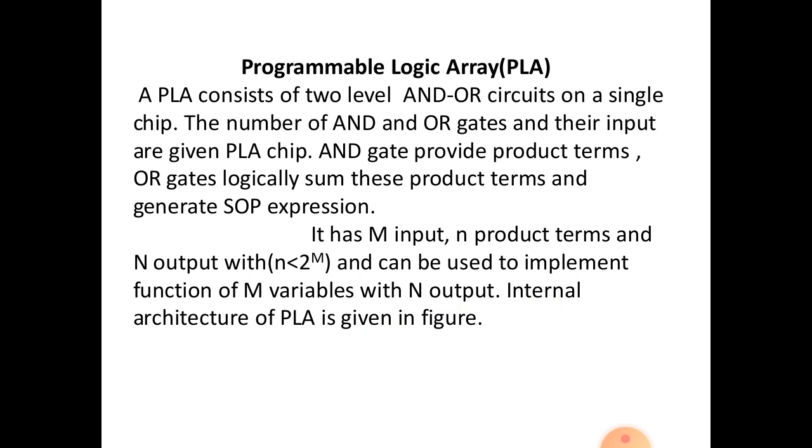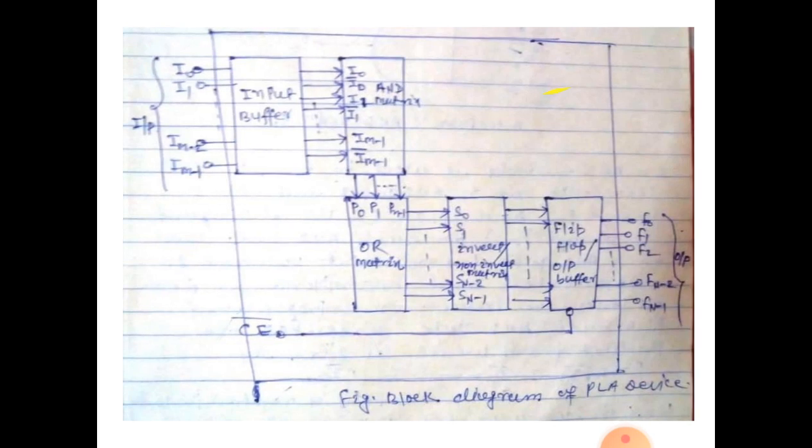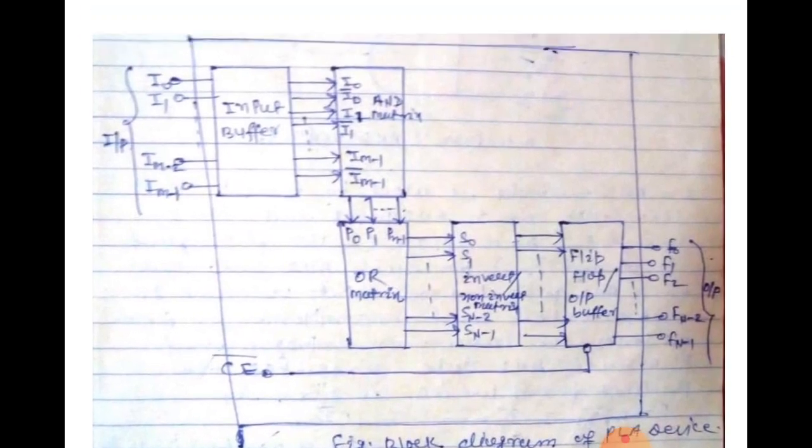Internal architecture of PLA is given in figures. The block diagram of PLA: First is capital M inputs. Input buffer. Input buffer output is complement and uncomplement form. That is input is M. The output of input buffer is 2M.